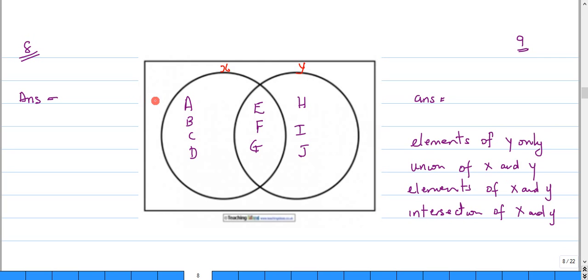Now use the Venn diagram below to answer items eight and nine. Here we have a Venn diagram, and Venn diagrams show the relationship between sets. We have set x and set y. Now number eight...